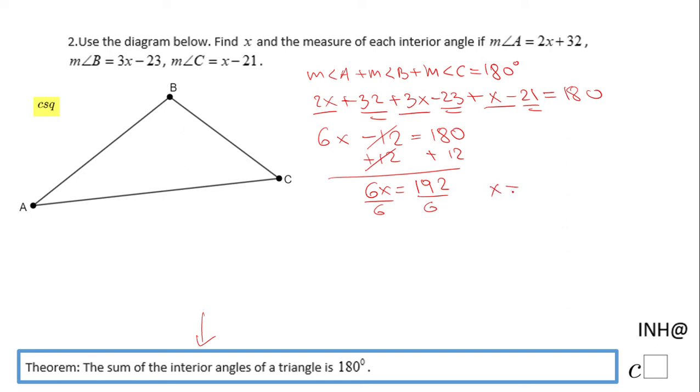And we get x equals 32. And now we can go to the last part of the problem: find the measure of each interior angle. We're going to start with the measure of angle A.